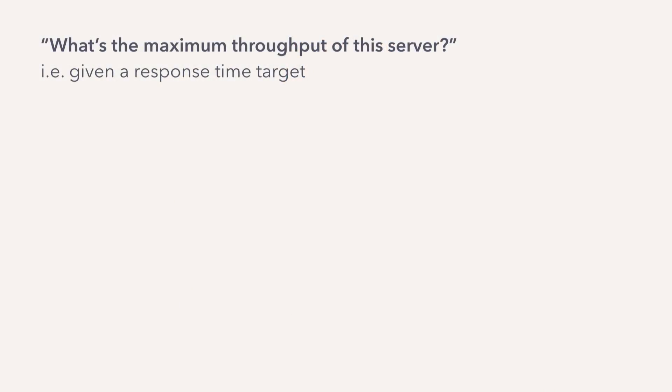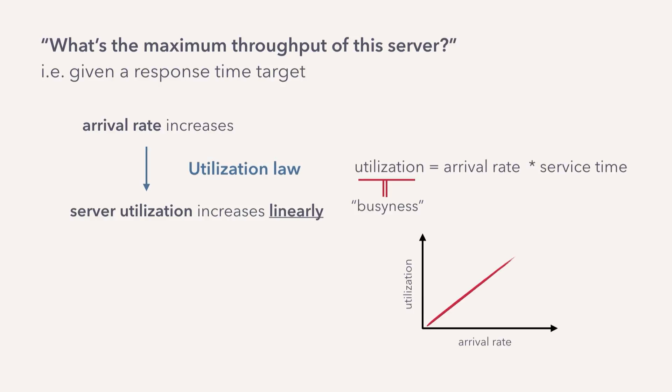So with this, let's answer our first question: what's the maximum throughput of the server? Using our model, let's reason through it intuitively. As we crank up the arrival rate, we expect the server's utilization — its busyness — to go up. The utilization law tells us that utilization is simply the arrival rate times the service time, which we're assuming is constant. So the utilization vs. arrival rate graph is linear.